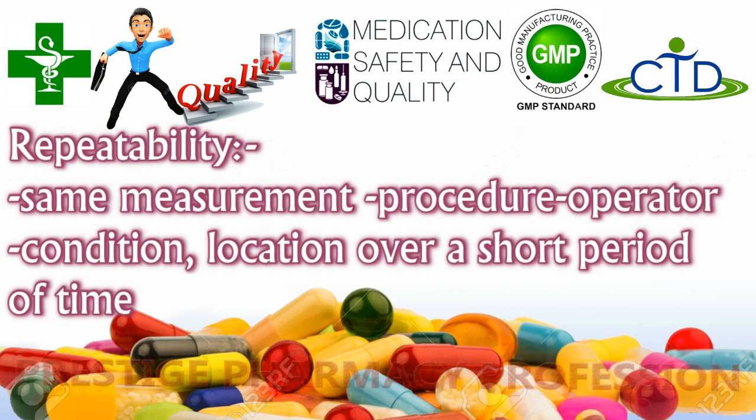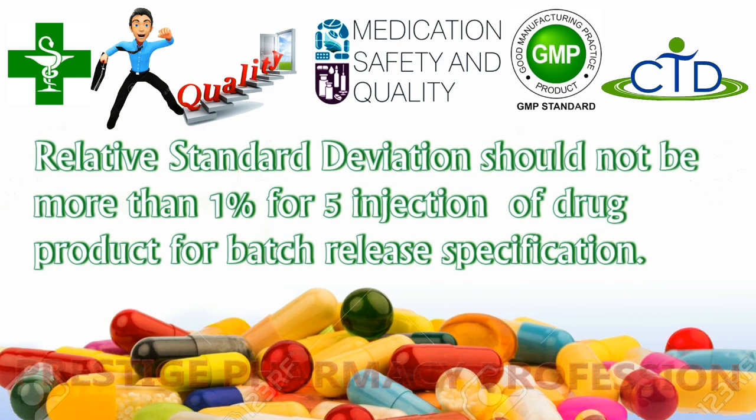Repeatability is determined by the relative standard deviation of the peak areas of chromatograms obtained in the same laboratory, by the same operator, using the same machine and the same sample. The relative standard deviation should not be more than one percent for a minimum of five injections. If the relative standard deviation values stay within the prescribed limit, the method is validated and accurate to use.